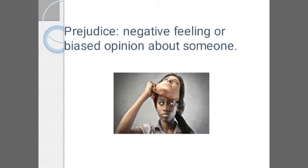Generally what happens is we prefer to like people who think like us, who look like us, whose dress, food habits, customs, and religions match with us. And we become unfamiliar and start thinking people strange whose habits, whose customs and traditions are different from us. In fact we start calling them strangers and we create negative opinion about them. So this is prejudice — prejudice means negative feeling or biased opinion about someone.